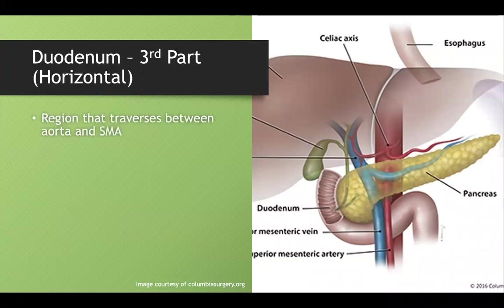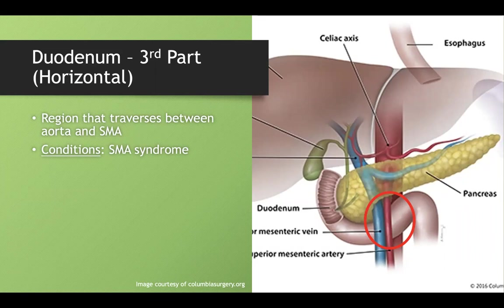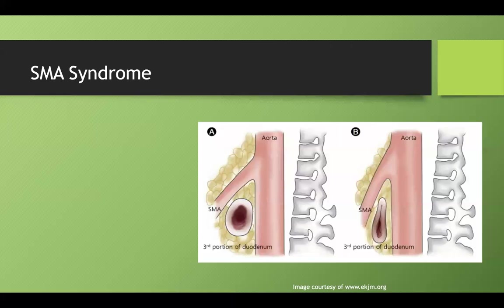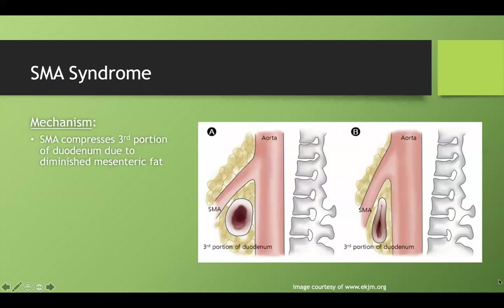The third part of the duodenum is the horizontal part. Anatomically, this region passes between the aorta and the SMA. This is important because SMA syndrome can squeeze down on this duodenum if there isn't enough fat cushion surrounding it. With adequate fat, the lumen stays open; when that fat is lost, the SMA can compress and constrict the lumen.